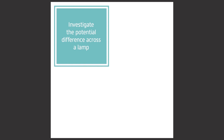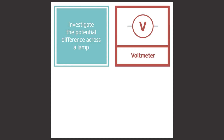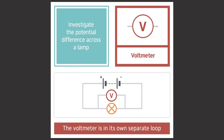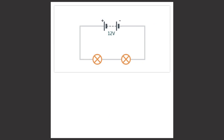Now let's investigate the potential difference across lamps placed in series and in parallel. To measure the potential difference across a lamp, we use a voltmeter. This must be placed in parallel with the lamp, meaning that the voltmeter is in its own separate loop. Firstly, let's look at the potential difference of lamps in a series circuit.